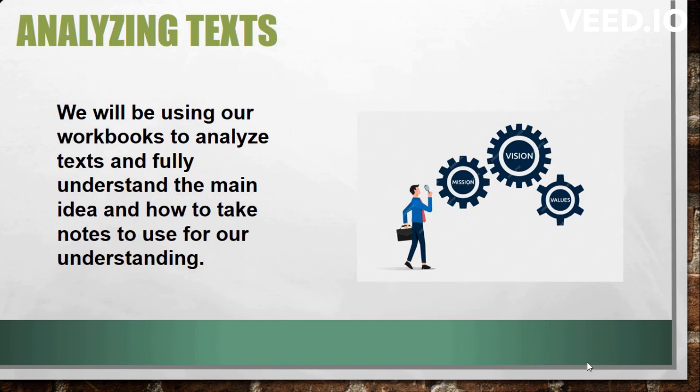Analyzing texts. We will be using our workbooks to analyze texts, and we're going to focus on how we can understand the main idea of the text and how we can use notes to help us understand and get to the main idea. Annotating by writing down things while we're reading our texts is a technique that we use a lot, and it helps us to further understand how to grasp each idea and fully understand the text that we're reading.